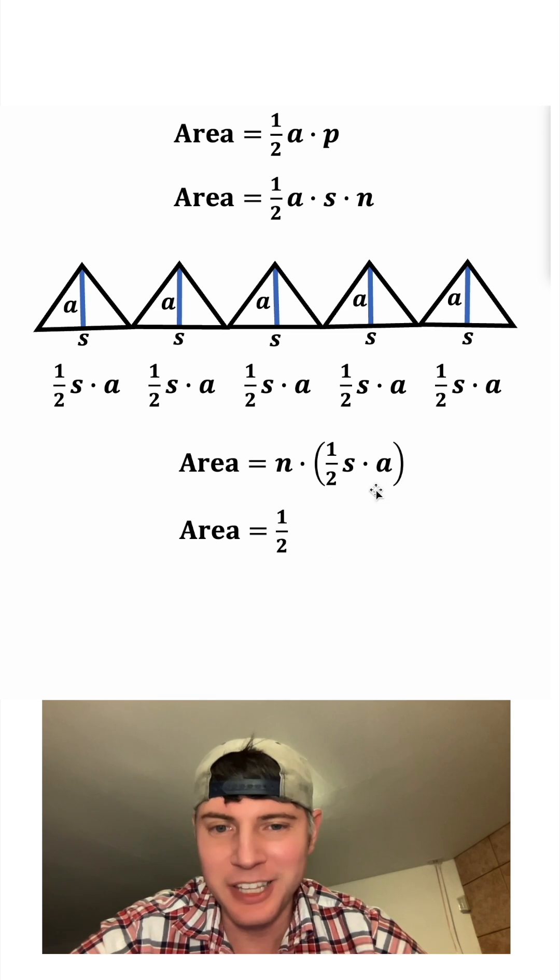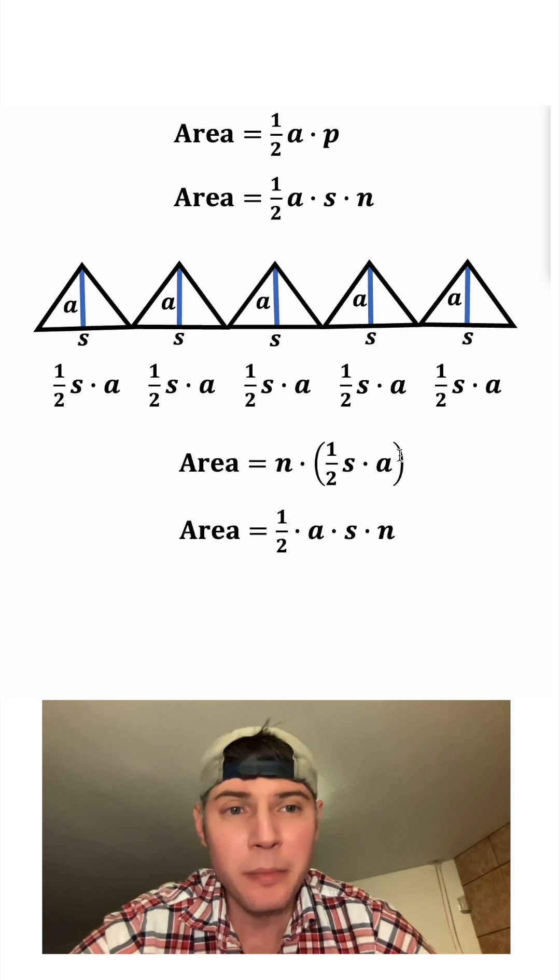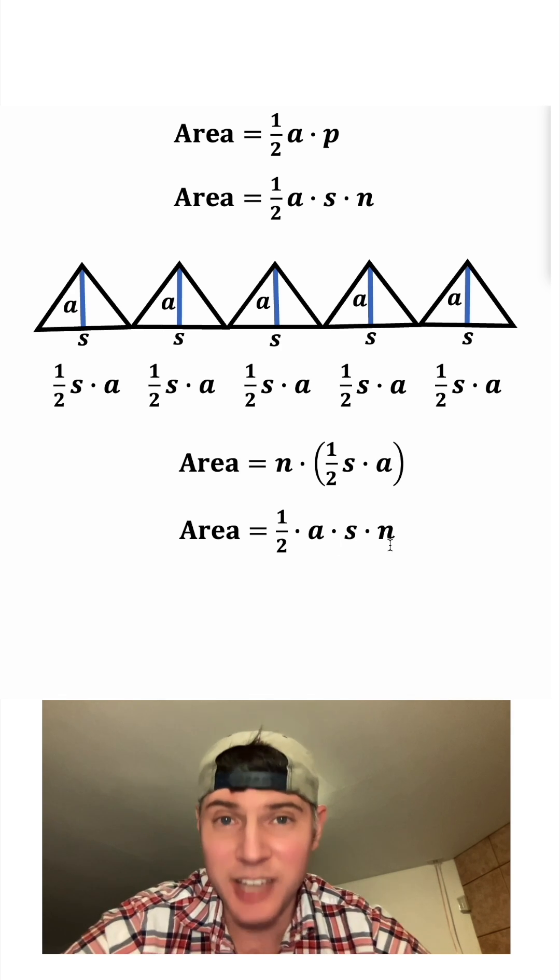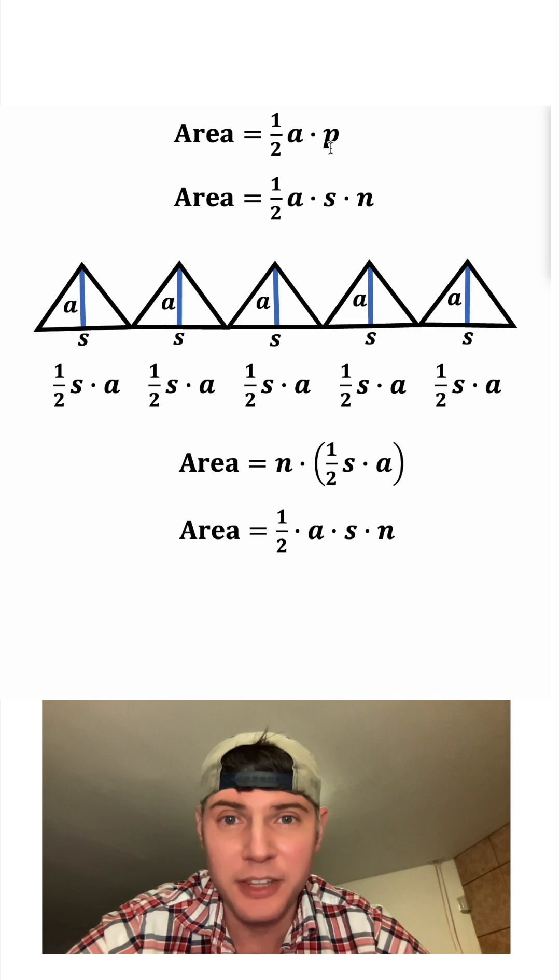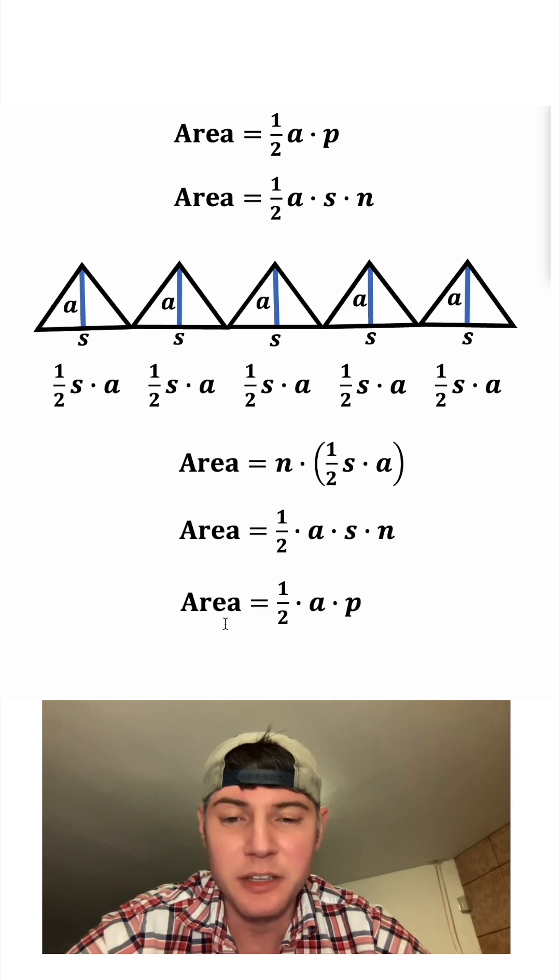So we can bring the one half in front. We can bring the A here, the S here, and we'll put the N over here. And if you remember S times N, that was the side length times the number of sides. Up here, we saw that was the perimeter. We can rewrite this as area equals one half apothem times perimeter.